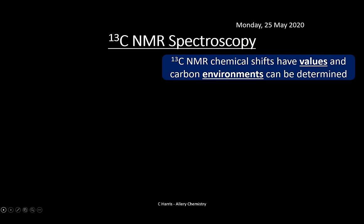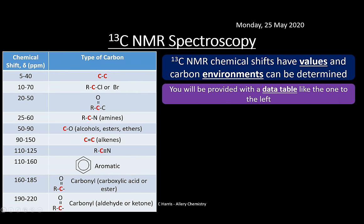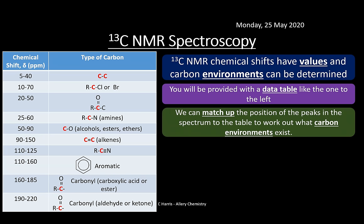Carbon-13 chemical shift data — provided on your data sheet — tells us about the environment a carbon might be in. Lower chemical shifts (further right on the graph) correspond to C–C environments; higher shifts indicate carbons bonded to electronegative elements. We can match peak positions on the spectrum to the data table to determine environments and ultimately deduce the structure of the compound. However, there are limitations: a peak at 190 ppm suggests a carbonyl group but can't distinguish aldehyde from ketone.